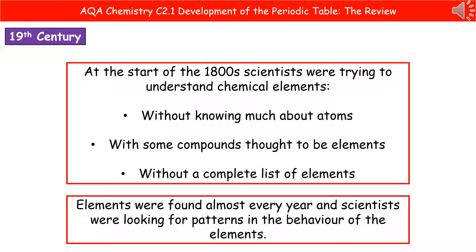Welcome to our review on the development of the periodic table. What we're going to do here is have a look and see how we actually came to get the periodic table that we all know today. To do this, we've got to go all the way back to the start of the 1800s.